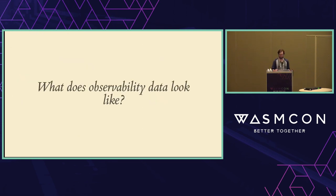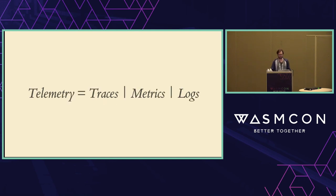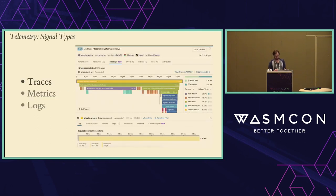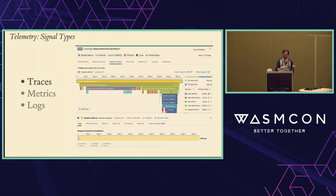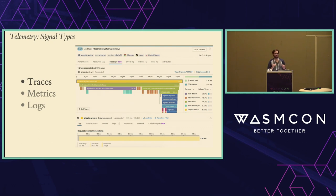So, what does this data look like in an observability system? The industry has standardized on some different data points, and we call all of these telemetry. There are three main flavors. First is a trace. A trace is like an atomic operation in your system — it's made up of a tree-like structure of steps called spans, which represent the duration and metadata of each step. What this step is exactly is up for you to define: it can be as high-level as an HTTP request or as low-level as a function call.